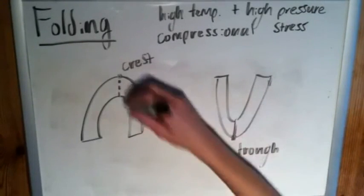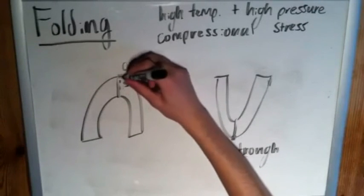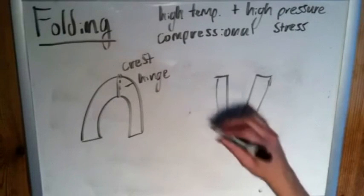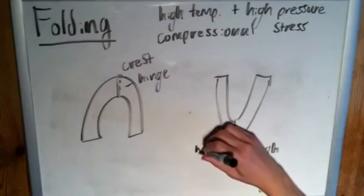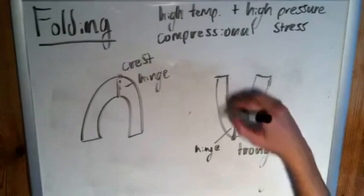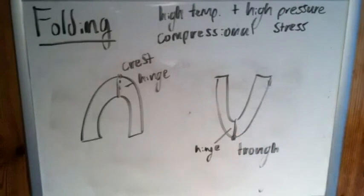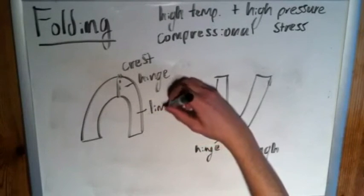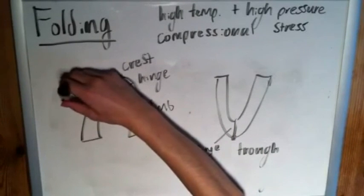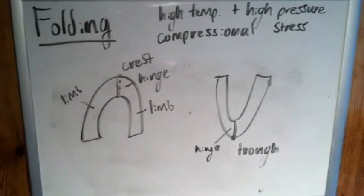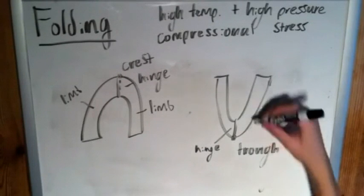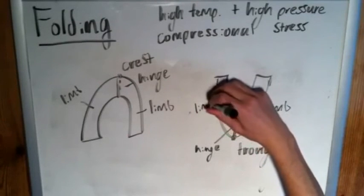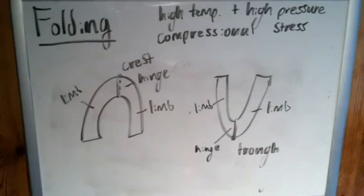We have this, if we just draw a little line through here, that's our hinge line, like a door hinge. It is the line upon which the limbs hinge, which brings us to our next terms: the limbs, which can be found on either side. They are the pieces that dip either upwards or downwards depending on whether it's an antiform or a sinform. Those are limbs. Each one has a right limb and a left limb.